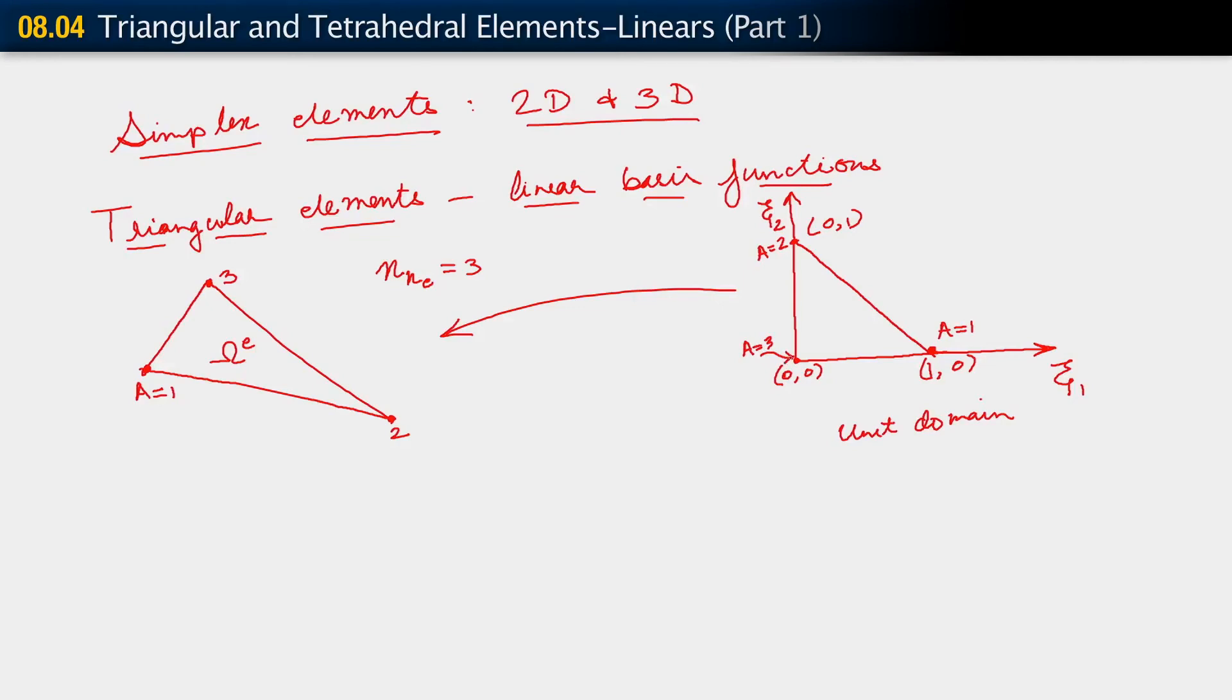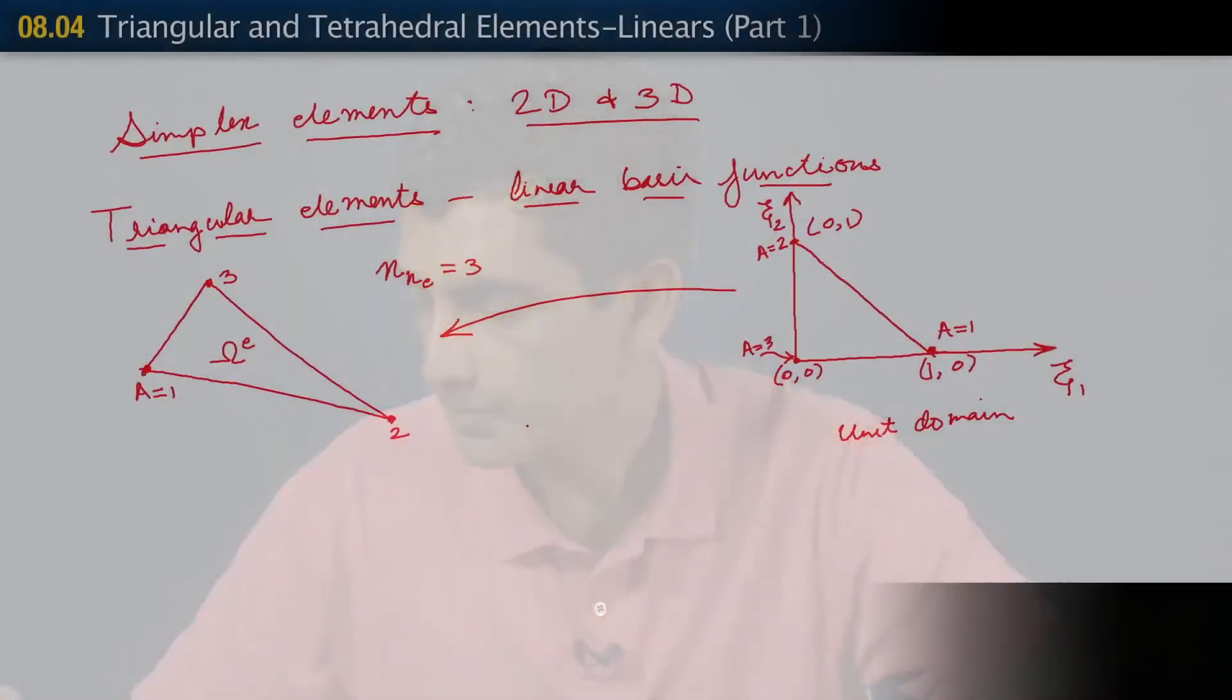All right, so we have three basis functions. And the way these things are set up is that although we have a two-dimensional domain, and so we truly need, of course, only two coordinates in that two-dimensional domain, we do go ahead and define a third coordinate. And the third coordinate is the following. What we do is also define C3 which is simply 1 minus C1 minus C2.